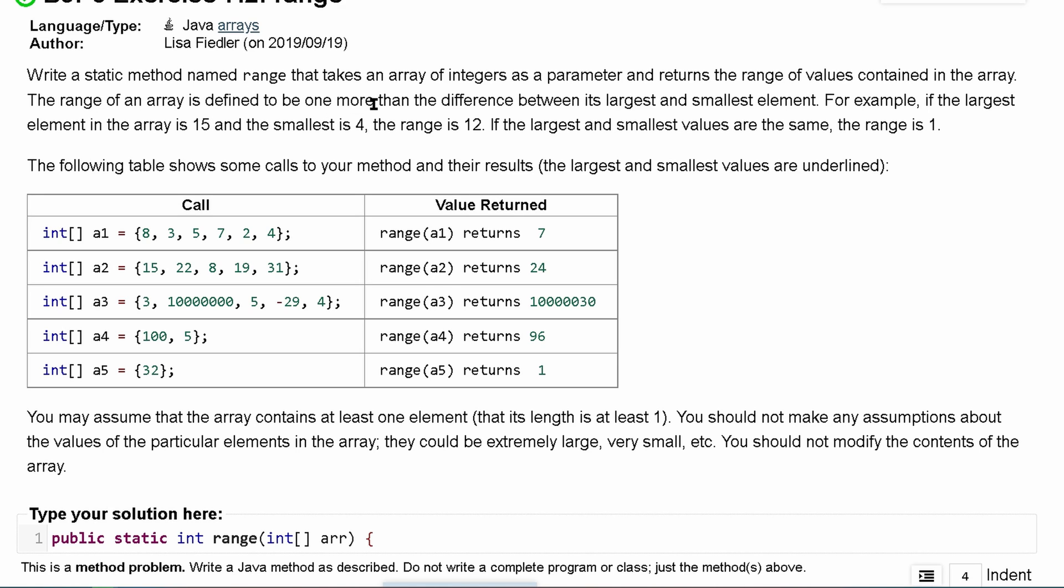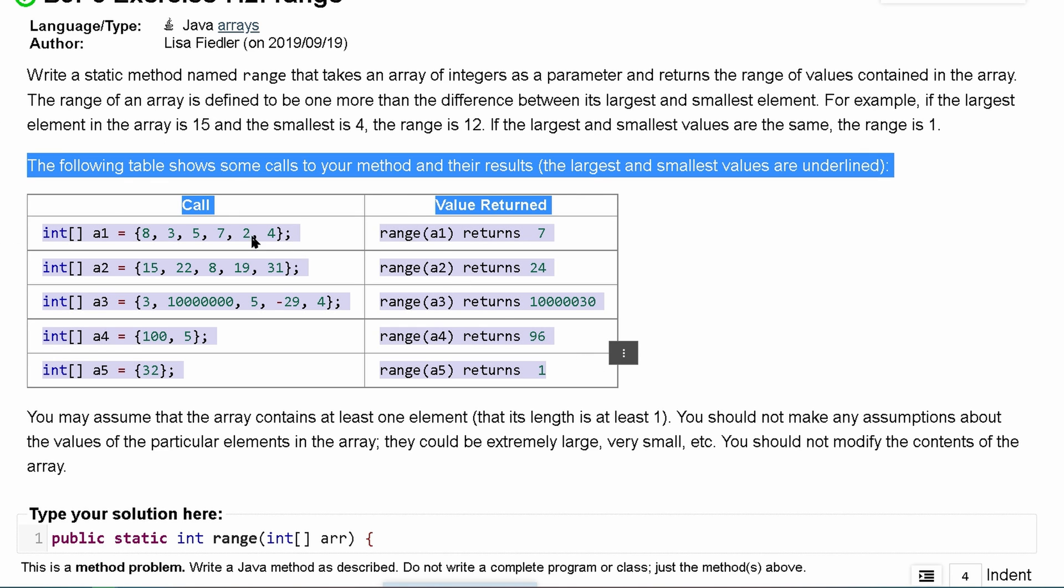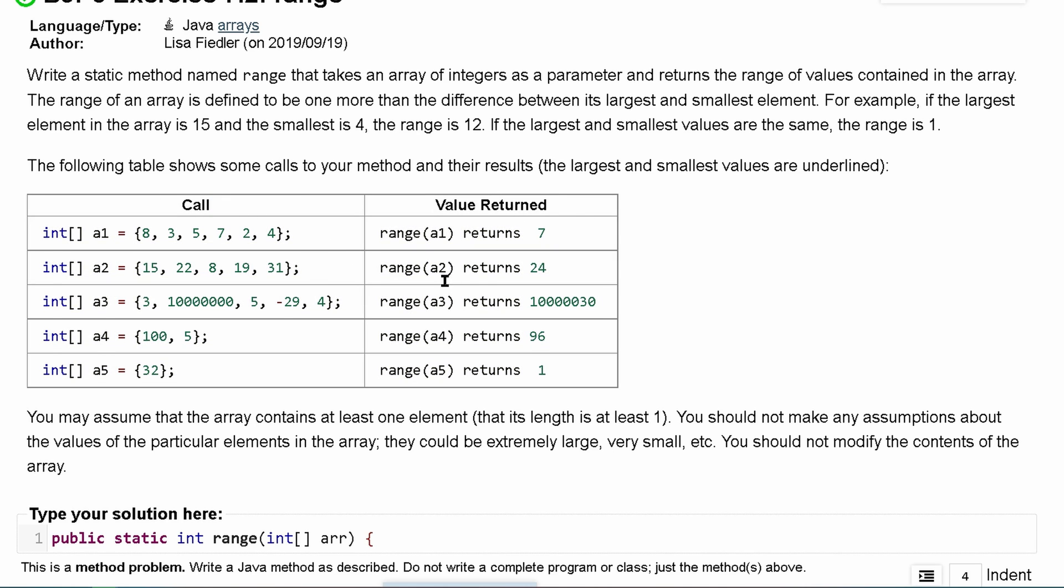be one more than the difference between its largest and smallest numbers. We're given an example and then we can show the call and value return for these results.